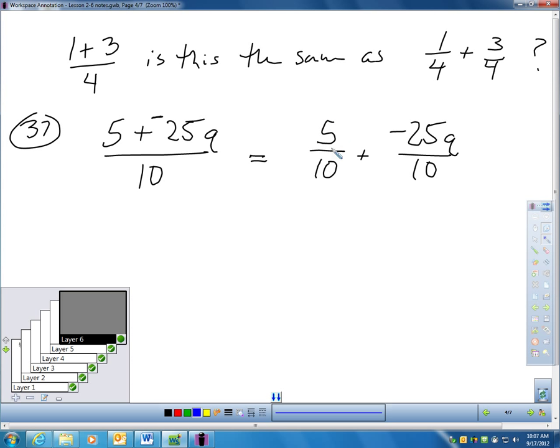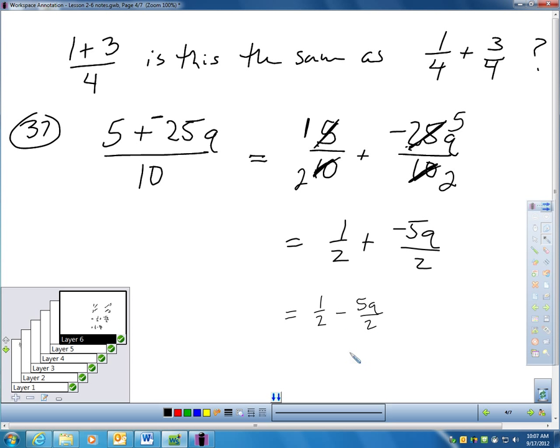Well, now it's time for me to reduce these. 5 tenths is a half. And here, can't I divide 25 and 10 each by 5? So, I did. So, I have half for my first fraction plus, remember, negative divided by positive is a negative. I have 5Q over 2. I just simplified this. I have one half plus negative 5Q over 2. I guess I could write that. If I really want to write it out nice at the end, I could just put one half minus 5Q over 2 now.